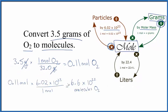I have it set up with conversion factors, but you're just multiplying 0.11 times 6.02 times 10 to the 23rd, and you get 6.6 times 10 to the 22nd molecules of O2. The nice thing about conversion factors is moles cancel out, so we know we did this right.